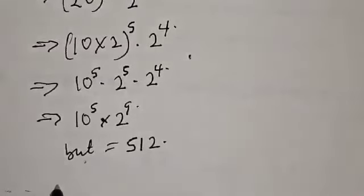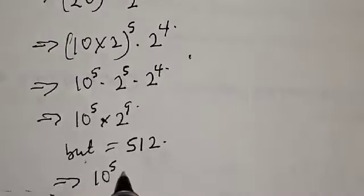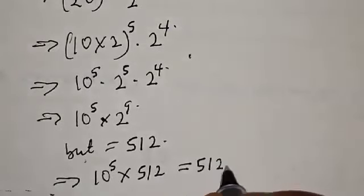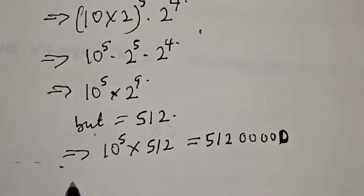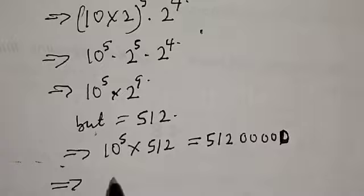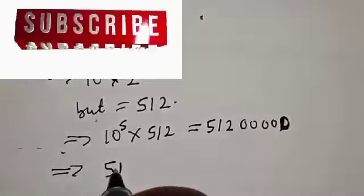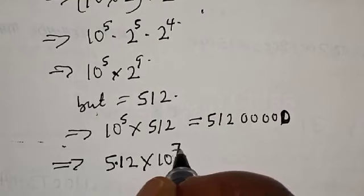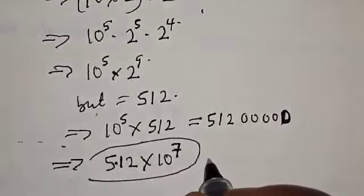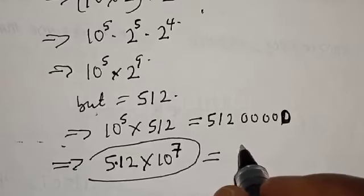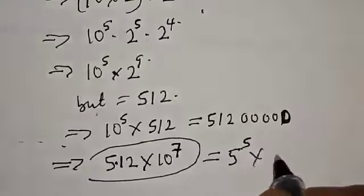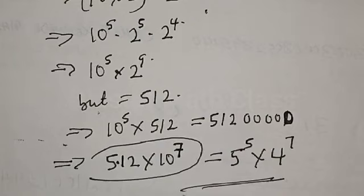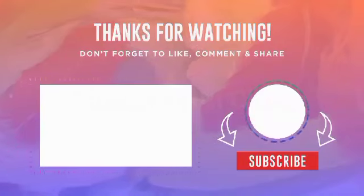So this implies that we have 10 raised to power 5 multiplied by 512, which equals 51,200,000. The final answer is 512 times 10 raised to power 7. That is our final answer — 5 raised to power 5 multiplied by 4 raised to power 7. That is just how to calculate without using a calculator. If you have enjoyed the class, please don't forget to like, share, comment and subscribe. Thank you.